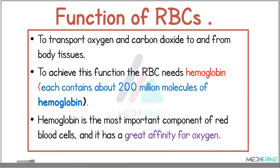The biconcave shape of the red blood cell allows them to swell without rupturing if the surrounding environment becomes hypotonic. Red blood cells are responsible for the transportation of oxygen and carbon dioxide to and from the body tissues. This function is achieved by the presence of hemoglobin, and each red blood cell contains about 200 million molecules of hemoglobin, which has a great affinity for oxygen.